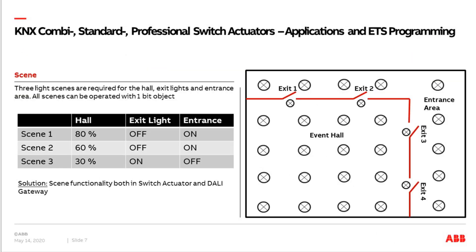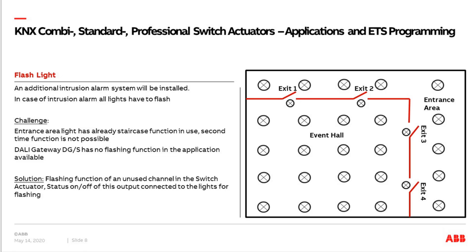Back to our project — this is an additional feature required. Last but not least, one more to show. Maybe later an intrusion alarm system will be installed. In case of any intrusion alarm, all lights shall flash — an additional alarm inside the building, switching on and off. We have the so-called flashing function in our switch actuators, available as a further time function. The challenge is that if you have already used the staircase function — as we use it in channel A for the entrance area — you cannot have a second flashing function anymore on the same channel. And the DALI gateway has no flashing function at all in the software.